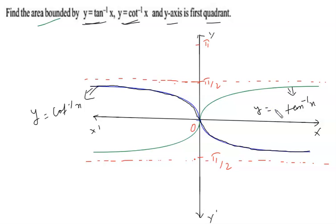We have to find out the area bounded by y = tan⁻¹x, y = cot⁻¹x, and the y-axis. However, there is no common region between tan⁻¹x, cot⁻¹x, and the y-axis as drawn initially, because both curves intersect each other at the origin.